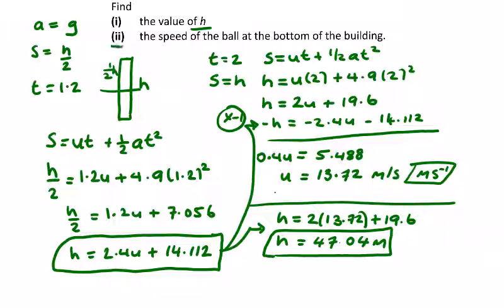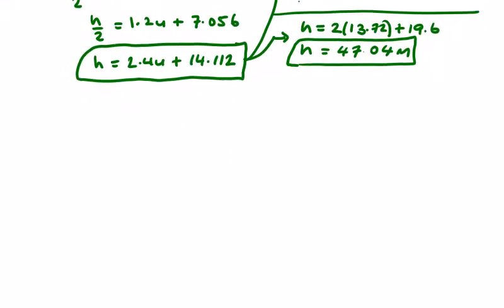Then in part 2, we're looking for the speed of the ball at the bottom of the building, so we're looking for v. So the equation with v on the left is v squared equals u squared plus 2as.